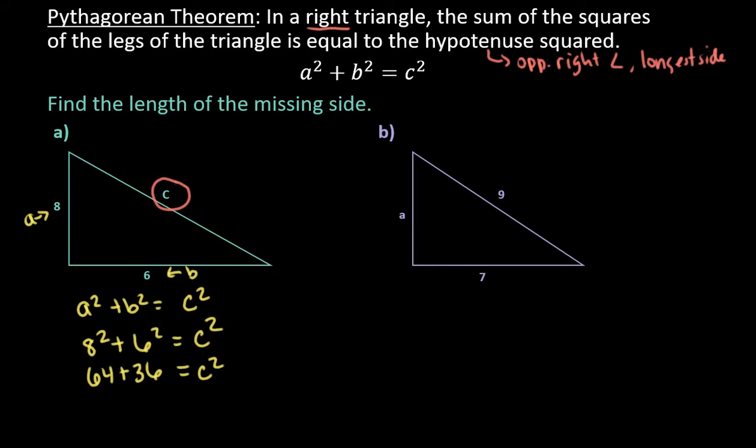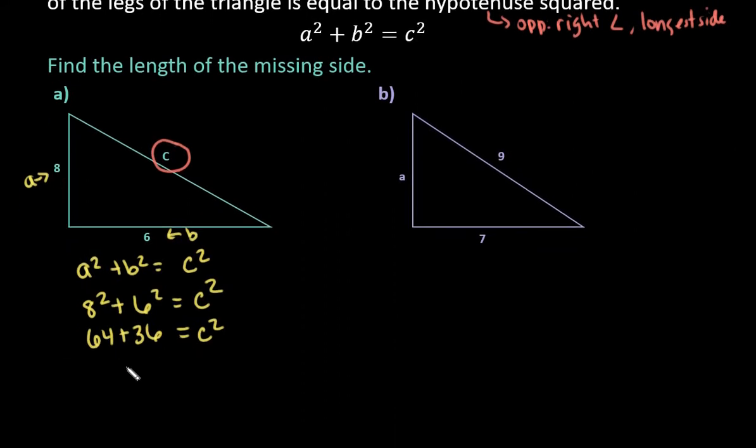And so this is a nice one because the sum of 64 and 36 is 100, which is a perfect square. So when I find the square root of both sides, I end up with C equals 10.